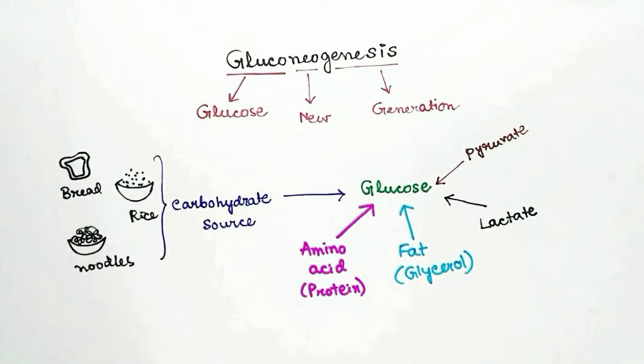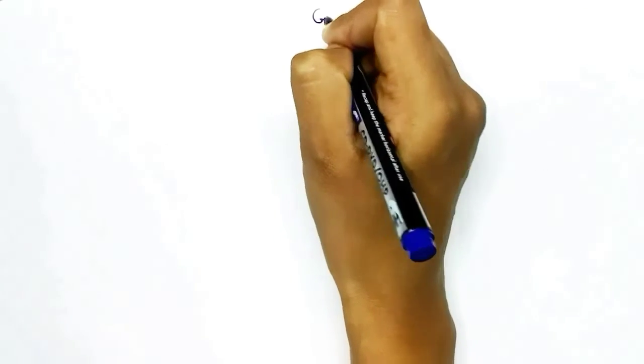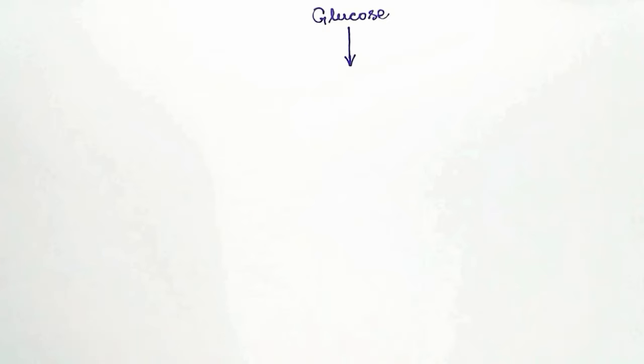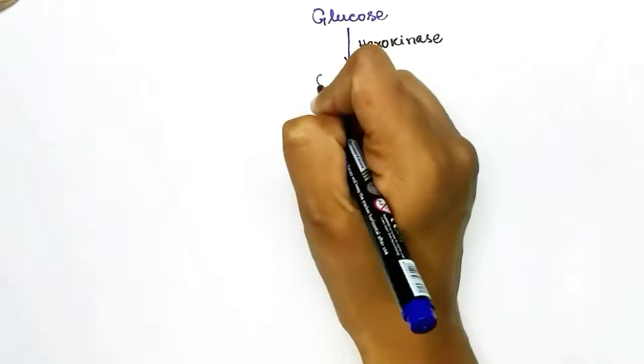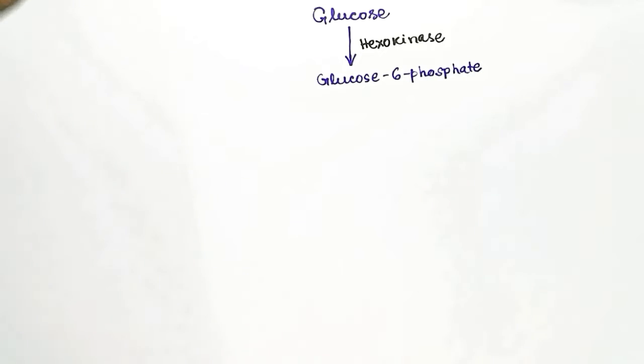When we produce glucose from sources other than carbohydrate, it is called gluconeogenesis. The gluconeogenesis pathway is very similar to the reverse pathway of glycolysis — glycolysis breaks down glucose, and gluconeogenesis forms glucose in the reverse way. However, some enzymes are different in gluconeogenesis. In glycolysis, some steps are reversible and some are irreversible; there are three irreversible steps.